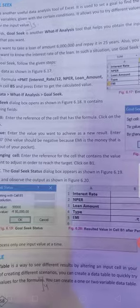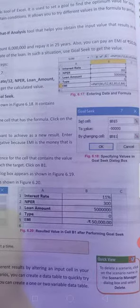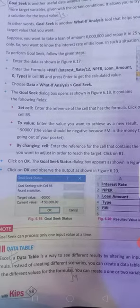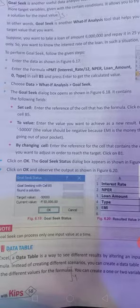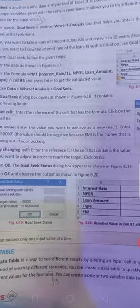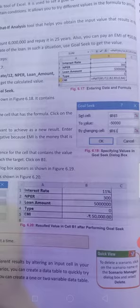In this set cell, what is the meaning of set cell dollar B dollar 5, means our EMI. To value, EMI value is fixed, enter the value we want to achieve as a new result means 50,000 we want. By changing cell, enter the reference for the cell that contains the value you want to adjust in order to reach the target, means interest rate, so it is B1.